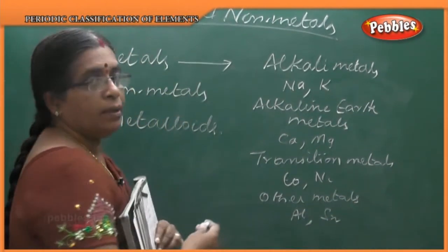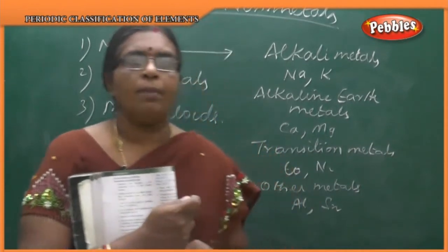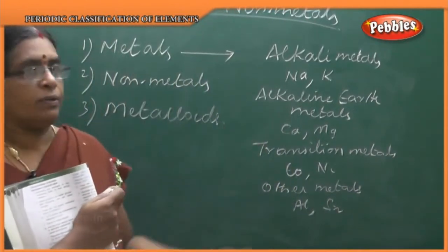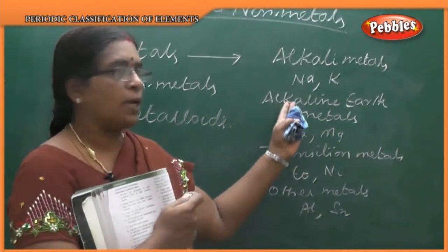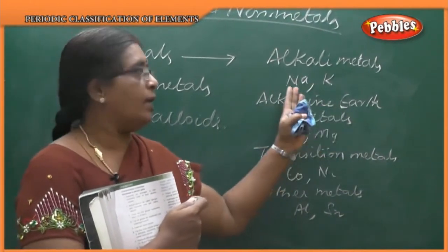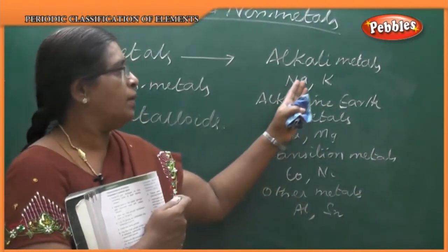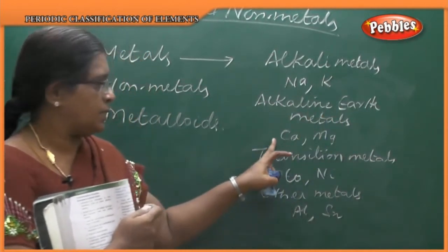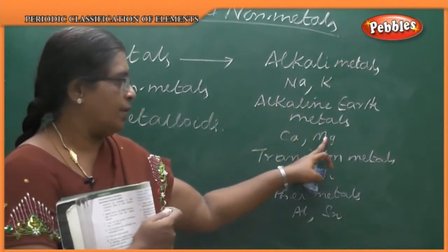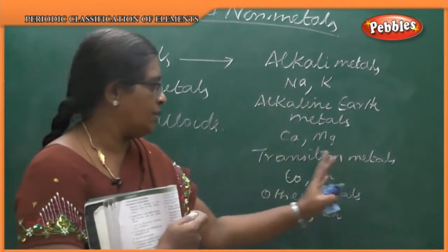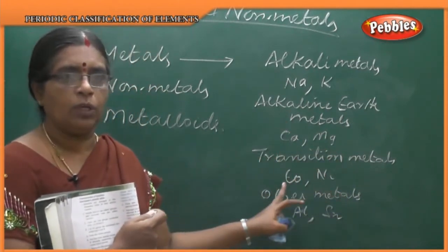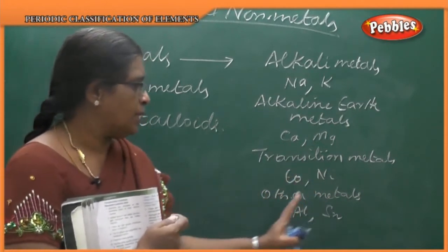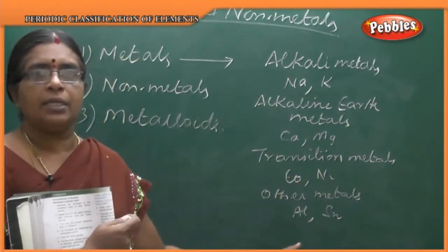So all these elements are classified into metals, non-metals, and metalloids. Metals are further classified into alkali metals — sodium (Na), potassium (K); alkaline earth metals — calcium (Ca), magnesium (Mg); transition metals — cobalt (Co), nickel (Ni); and other metals — aluminium and tin (Sn).